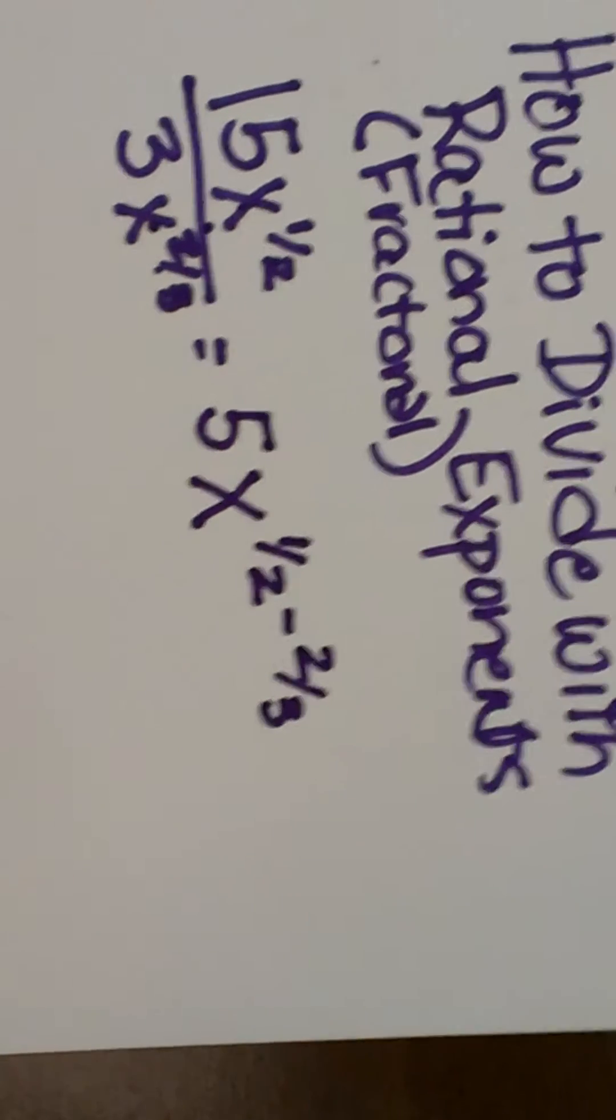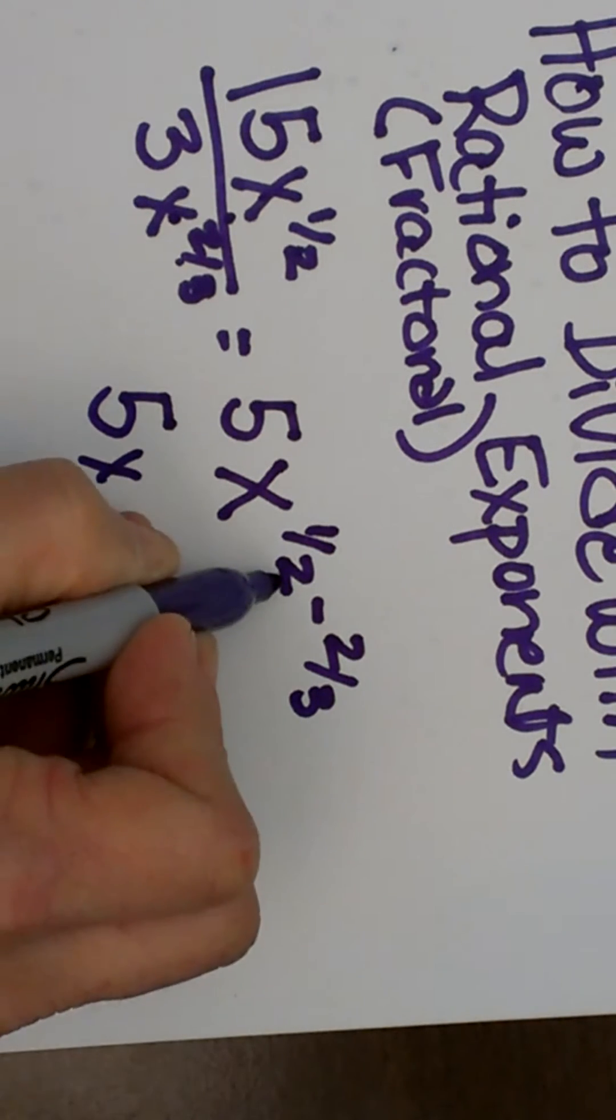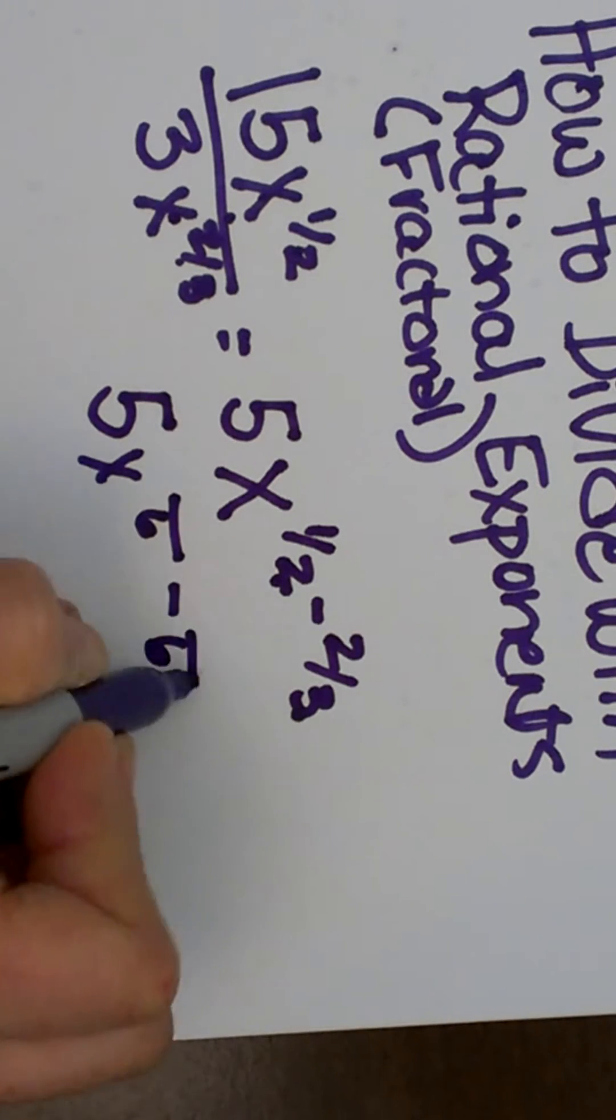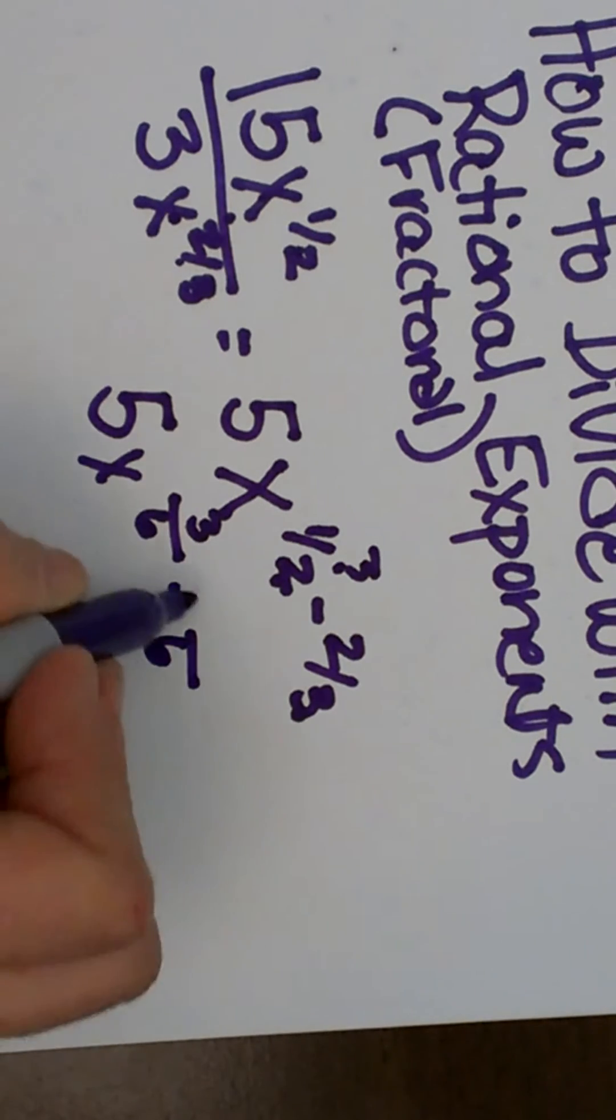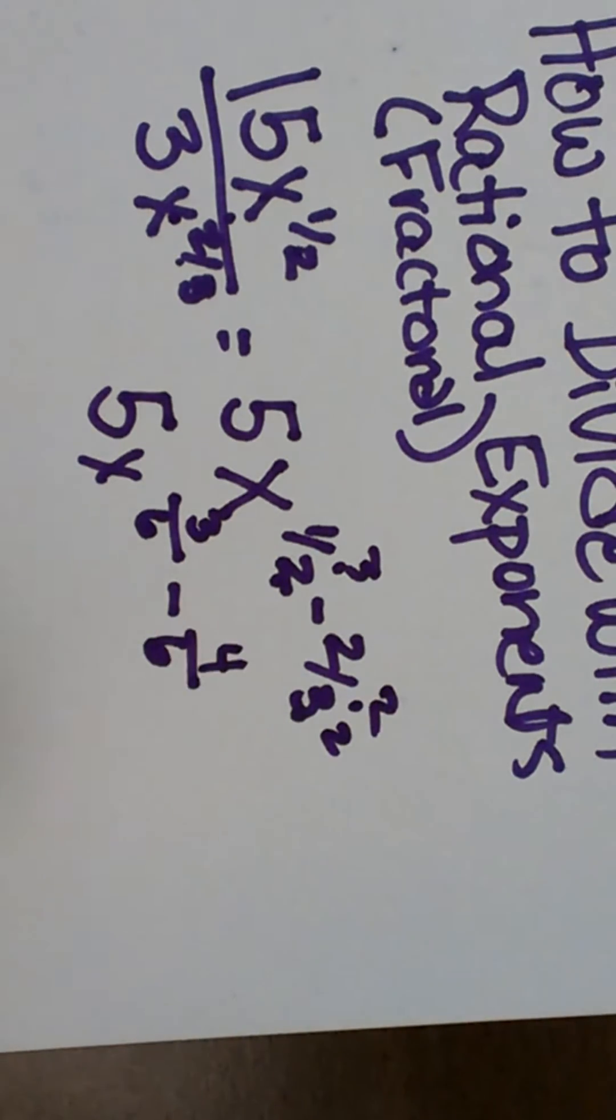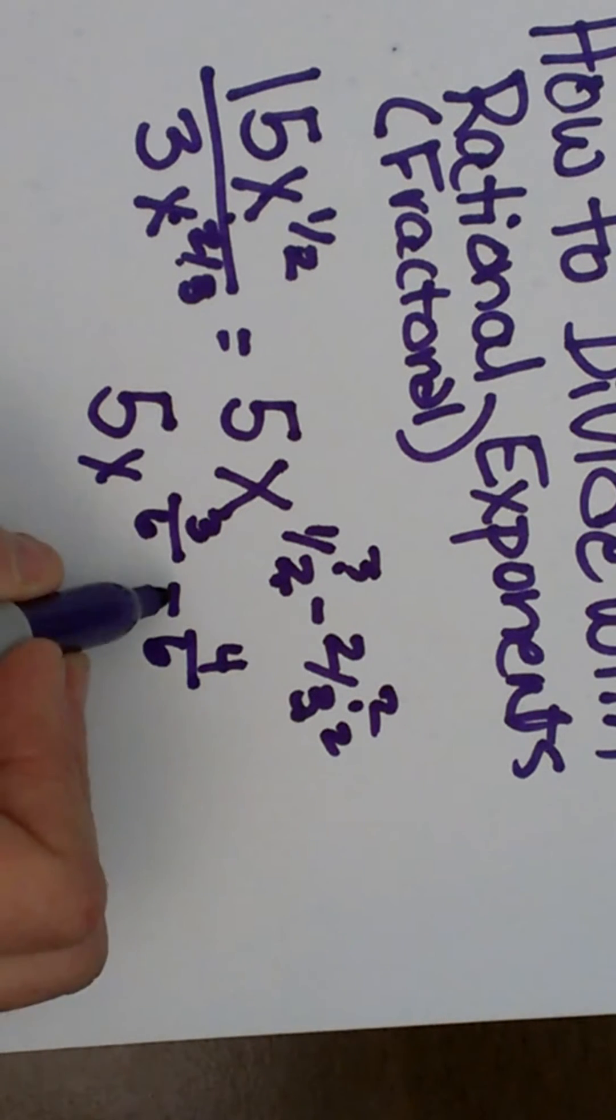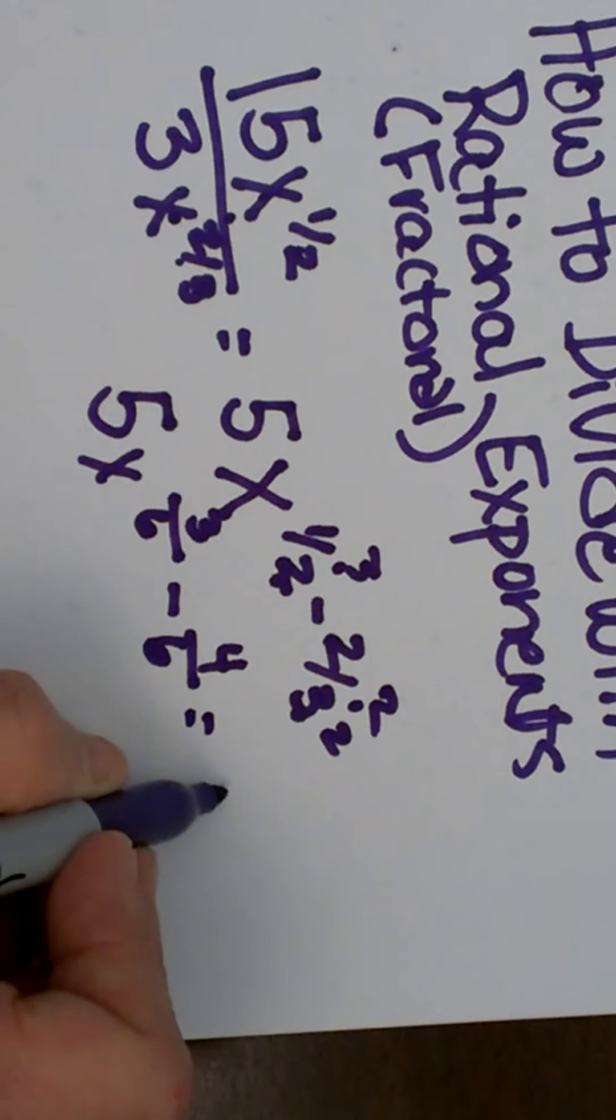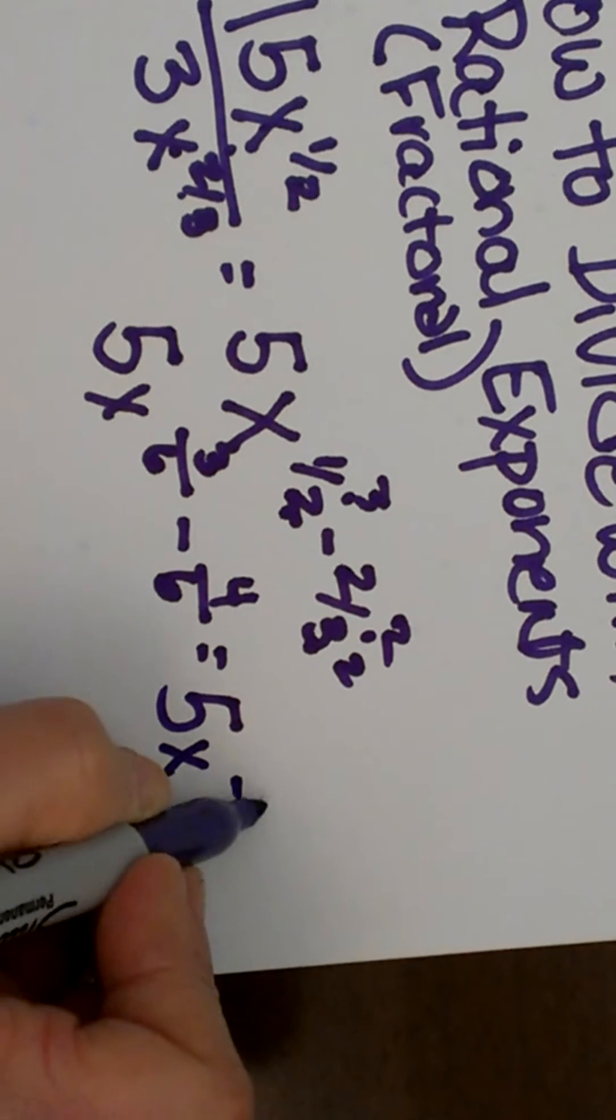So let's simplify that. We have to get a common denominator. We have a 2 and a 3, so the common denominator is 6. So we need to multiply 1/2 by 3, so it is going to be 3/6 minus, multiply this one by 2, that is going to give me 4. So I have 5x to the 3/6 minus 4/6 and that is going to give me 5x to the negative 1/6.